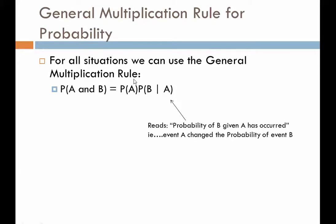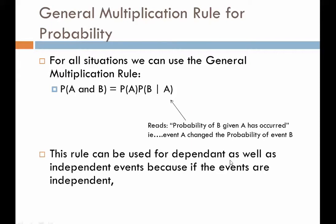If the two events are independent, then the fact that A has occurred does not change the probability of B. However, if they're dependent, then assuming A has occurred, we change the probability of B based on however A has affected B. This rule can be used for dependent as well as independent events, because if the events are independent, the probability of B given A equals simply the probability of B. If A does affect B, then the probability of B will be adjusted accordingly.